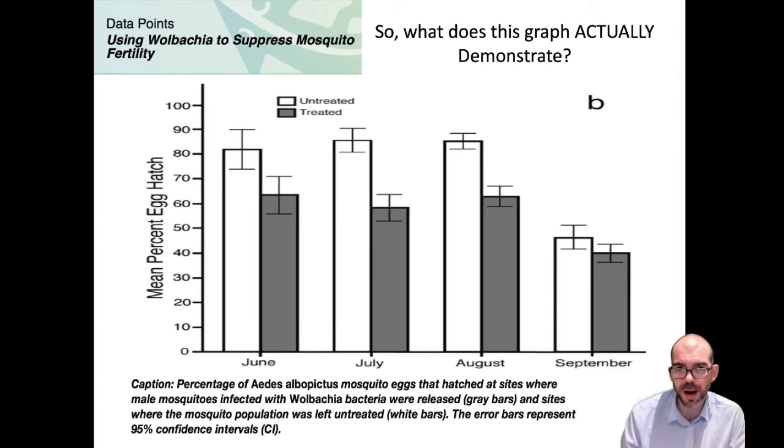Great. That means there would be a difference between my treated or untreated groups. So knowing that, let's return to this graph. What can I conclude now on the effects of the bacteria treatment with the mosquitoes? Well, now I know that in June, July, and August, there is a significant difference between groups. The treatment did have an effect. Specifically, the bacteria reduced the likelihood of that egg hatch hatching. However, in September, there was no effect. The bars overlap. So I would say that the data is the same. There was no difference between the treated and untreated groups in September. However, there were in June, July, and August.